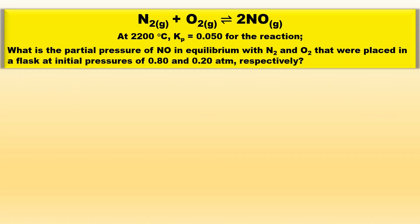Consider the following reaction where N2 plus O2 is in equilibrium with 2 moles of NO gas at 2200 degrees Celsius with a Kp value of 0.050. What is the partial pressure of NO in equilibrium with N2 and O2 that were placed in a flask at initial pressures of 0.80 and 0.20 atm respectively?